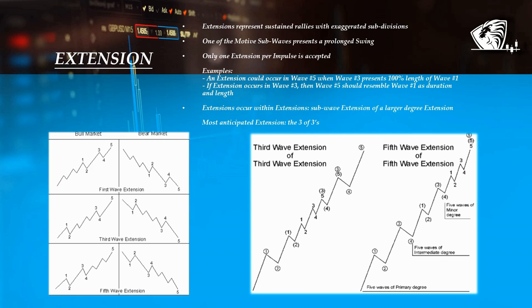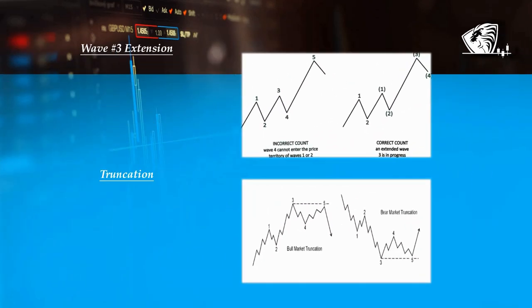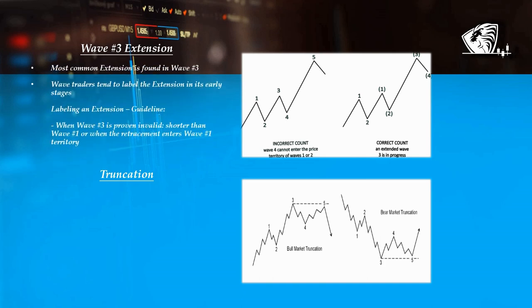Extensions also occur within extensions, making this the subwave extension of the larger degree extension. Traders these days often look for the three of threes. Wave 3 is typically and most commonly the extended wave, hence the reason why wave traders tend to form the habit of labeling the extension in its early stages of development. A good way to spot an extension would be when wave 3 is proven to be unacceptable, shorter than wave 1, or when the retracement enters wave 1's territory, in which case it would need to be relabeled as the first subwave in the extension itself.